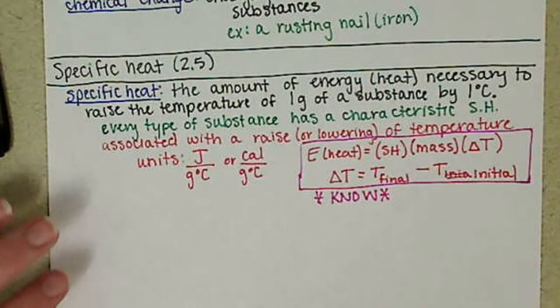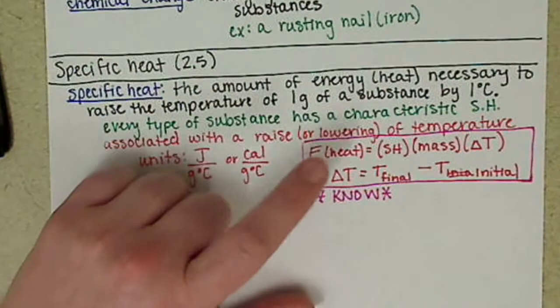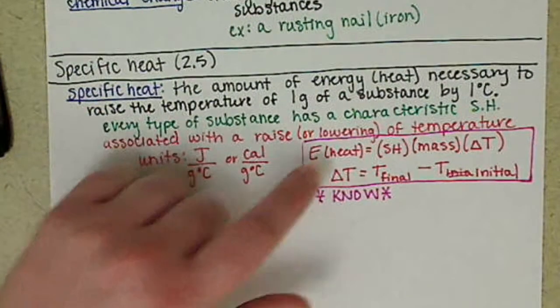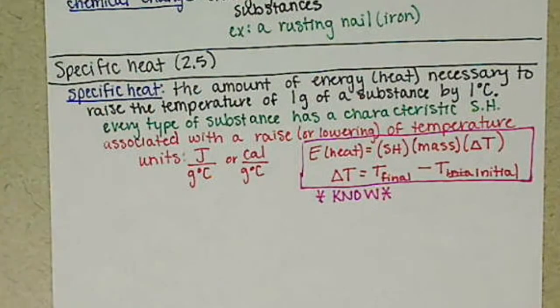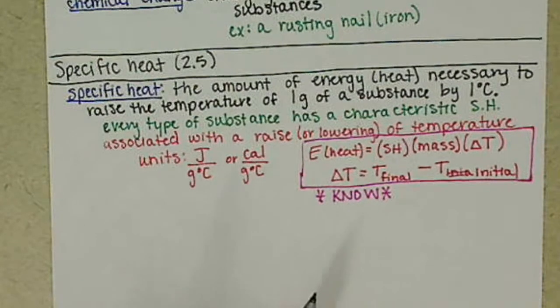These are equations that you will want to know. So on an exam or on the cumulative final, this is an equation you're going to want to have in your memory banks. I have values of specific heat for each substance. Those will be given to you. You don't have to memorize any tables or anything like that.